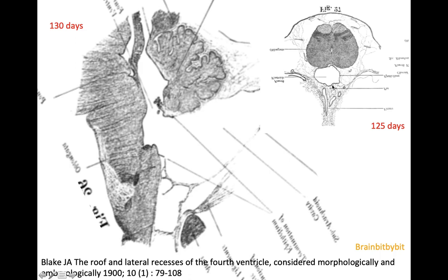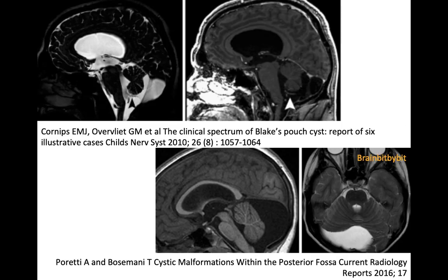Also in a transverse drawing at the level of the medulla you can see that the median part of the cisterna magna has a ventricular origin and not a subarachnoid origin. So the border between the ventricular system and the subarachnoid space is not at the level of what we see as Magendie's foramen, but a little bit more posterior.